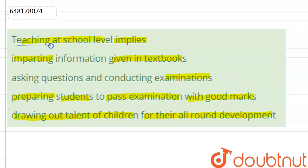I want to tell you about this question — 'Teaching at school level implies.' In school level, we give children teaching and study. So what is the motive basically? Option 1: Imparting information given in textbooks — just giving information from textbooks? Option 2: Asking questions and conducting examinations — just questions and exams? No, this option is incorrect. Option 3: Preparing students to pass examinations with good marks — prepare them to get good marks? No, this is incorrect.